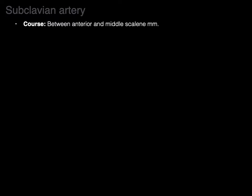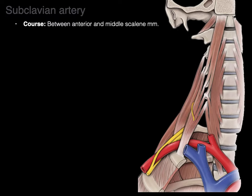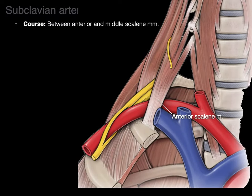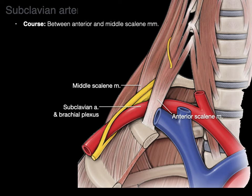The subclavian artery courses between the anterior and middle scalene muscles. The subclavian artery and brachial plexus exit between the two scalene muscles. Notice that the subclavian vein is anterior to the anterior scalene muscle.